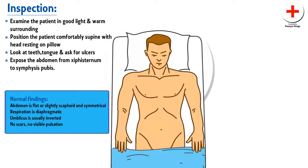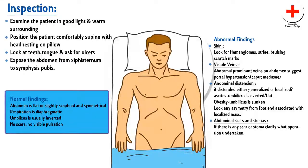Normal findings include a bilaterally symmetrical, flat or slightly scaphoid abdomen. The umbilicus is inverted, with no scars and no visible pulsation. Abnormal findings include haemangiomas, striae, bruising, or scratch marks on the skin. Abnormal prominent veins may suggest portal hypertension. A distended abdomen, abdominal scars, or stomas may also be noted.